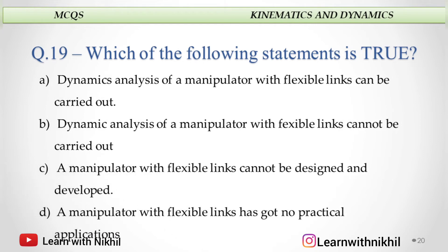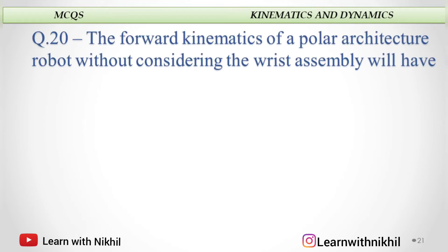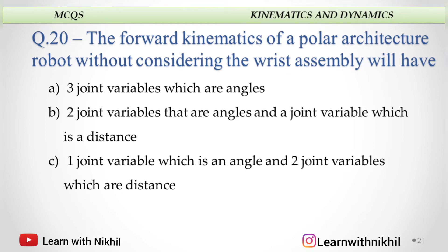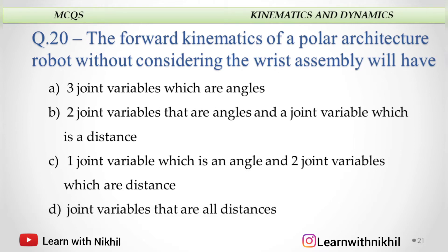Similar type of question — which statement is true? The dynamic analysis of a manipulator with flexible links can be carried out. This is the true statement out of all options. For the forward kinematics of a polar architecture robot without considering the wrist assembly: two joint variables are angles and one joint variable is a distance. You can see this in the first video lecture on the first chapter.